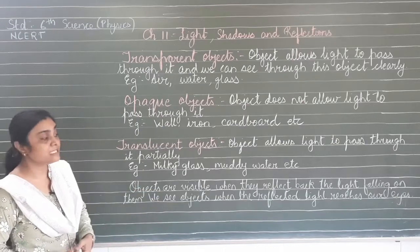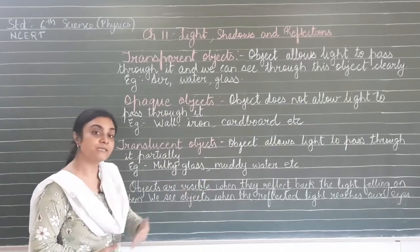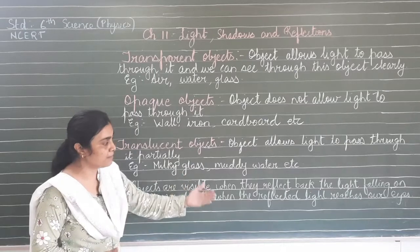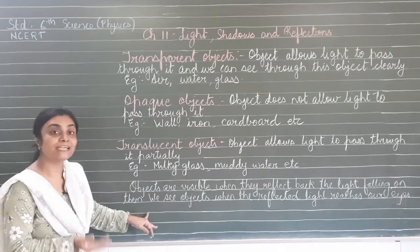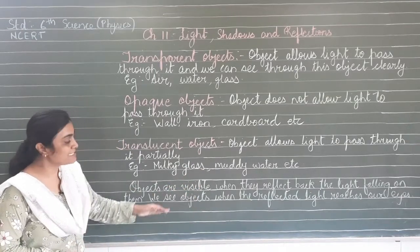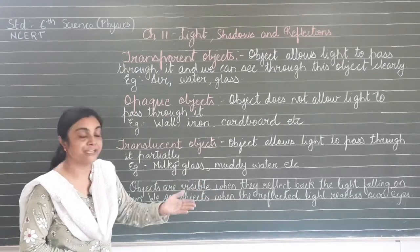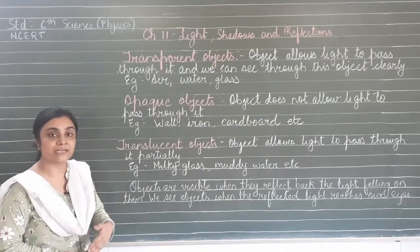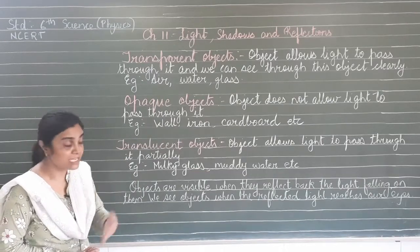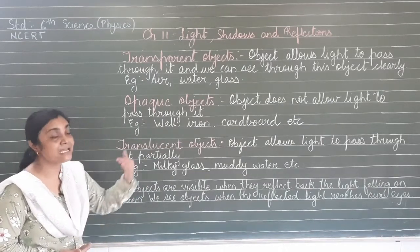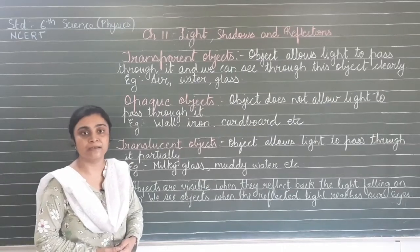Objects are visible when they reflect back the light falling on them. We see these objects when the reflected light reaches our eyes - because the eye has a lens - and then only we can see the objects clearly.